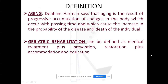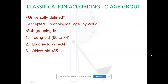According to Denham and Haman, aging is the result of progressive accumulation of changes in the body. It is normal, but the changes compared to a younger person are different. As age progresses, several changes occur relating to musculoskeletal, respiratory, neurological, and all other systems. These changes increase the probability of disease and eventually death. Geriatric rehabilitation can be defined as medical treatment plus prevention, restoration plus accommodation, and education.